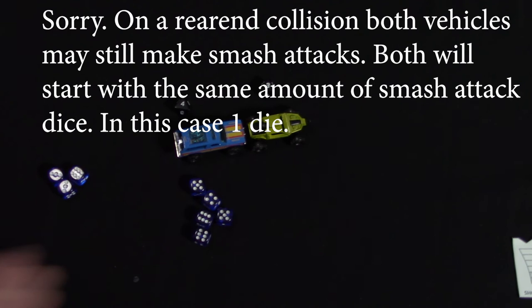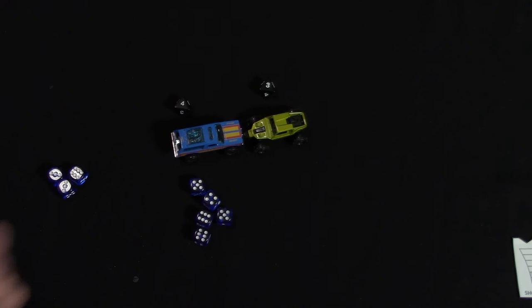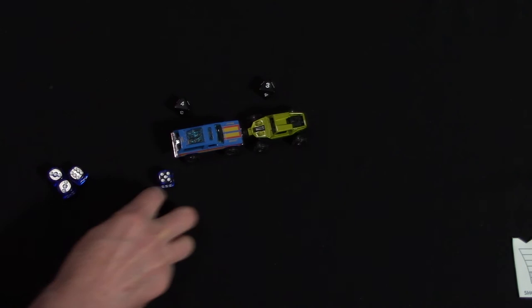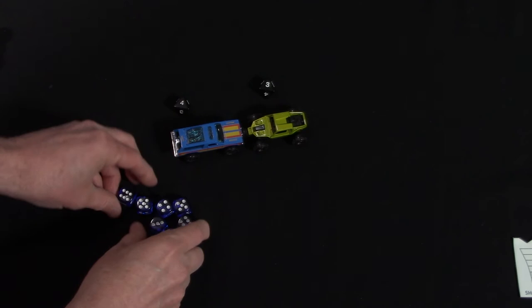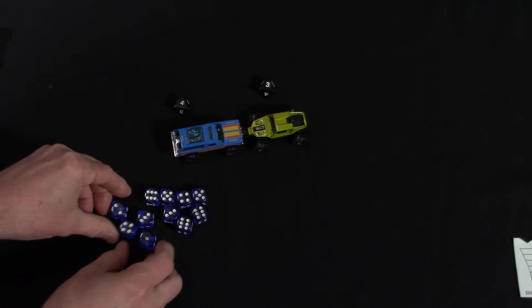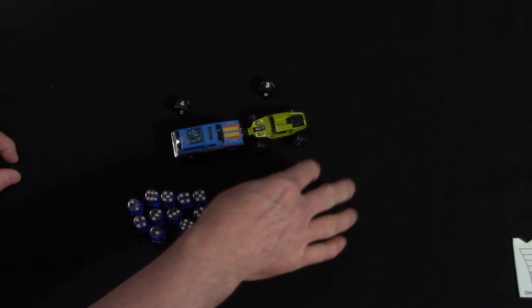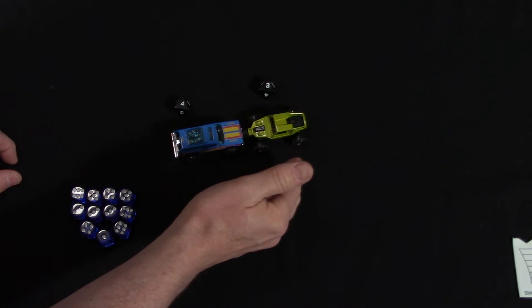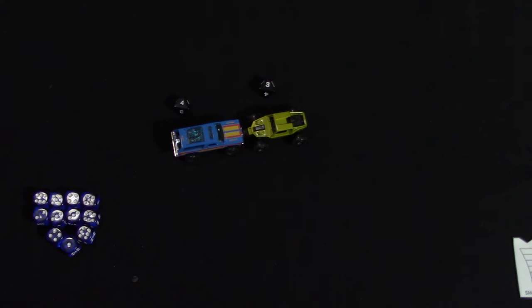And then of course it's going to get its four dice because it's heavier. Now what if it's a head-on collision? There's side, tailgate kind of rear, and head-on. You basically add the speeds together. So this one's going to get seven plus it's four for being heavier. This one's also going to get seven, but it's going to lose two dice, so it's going to be at five dice. And they're both of course are going to get two hazards.